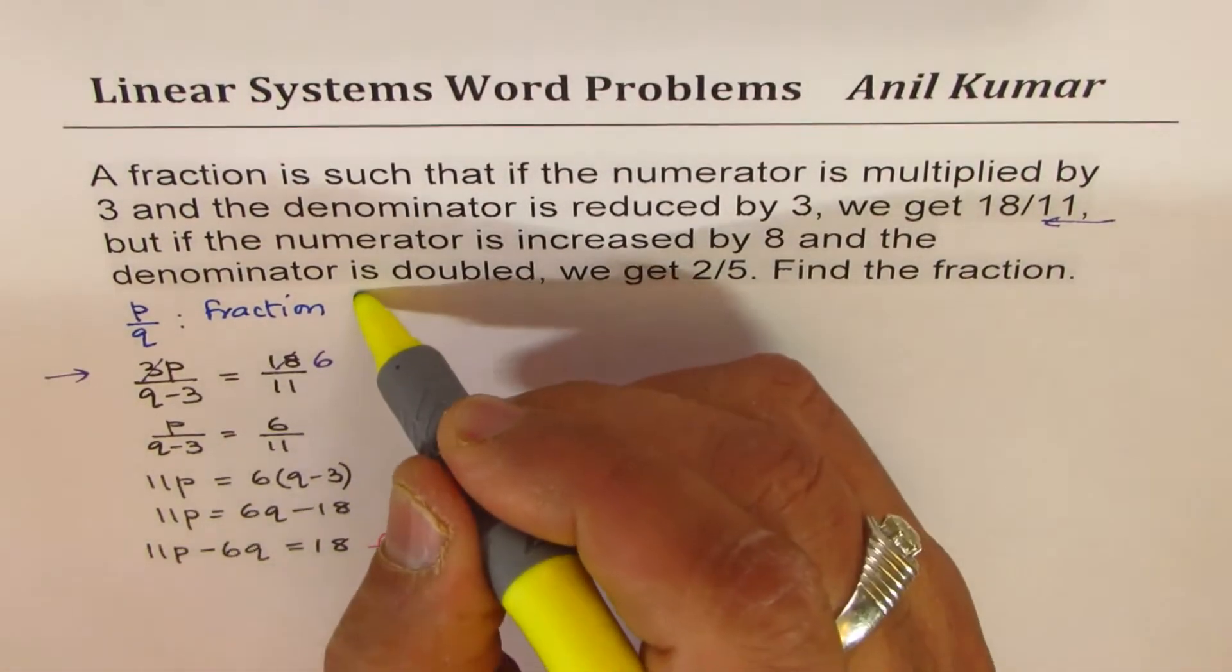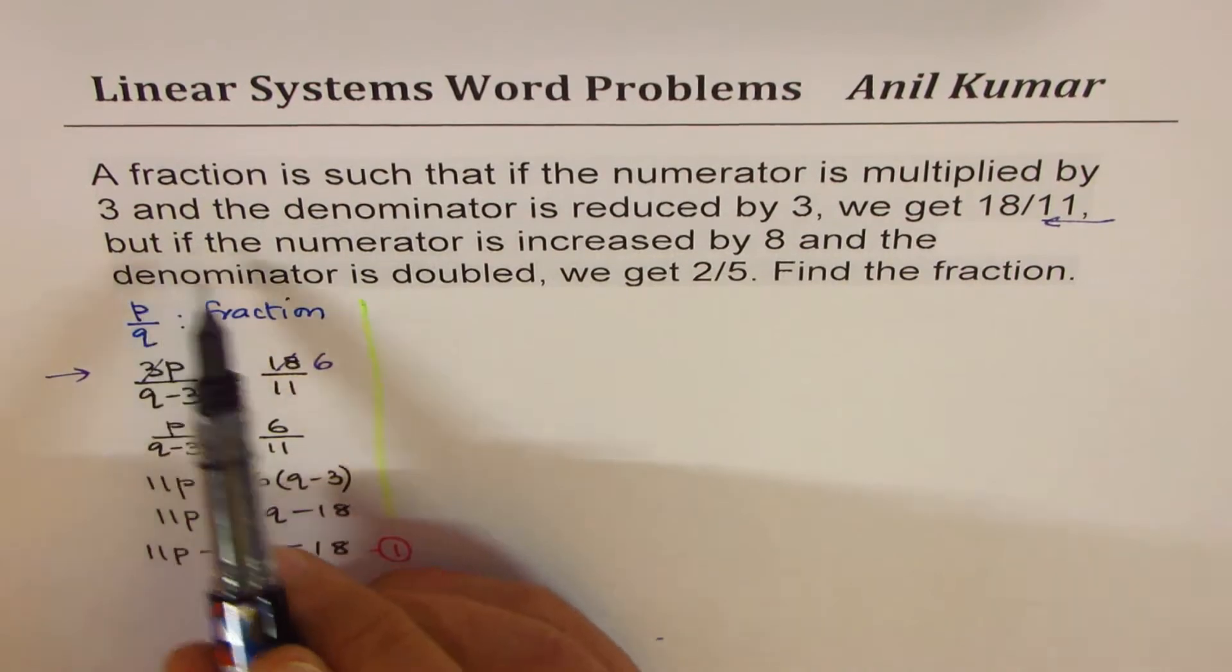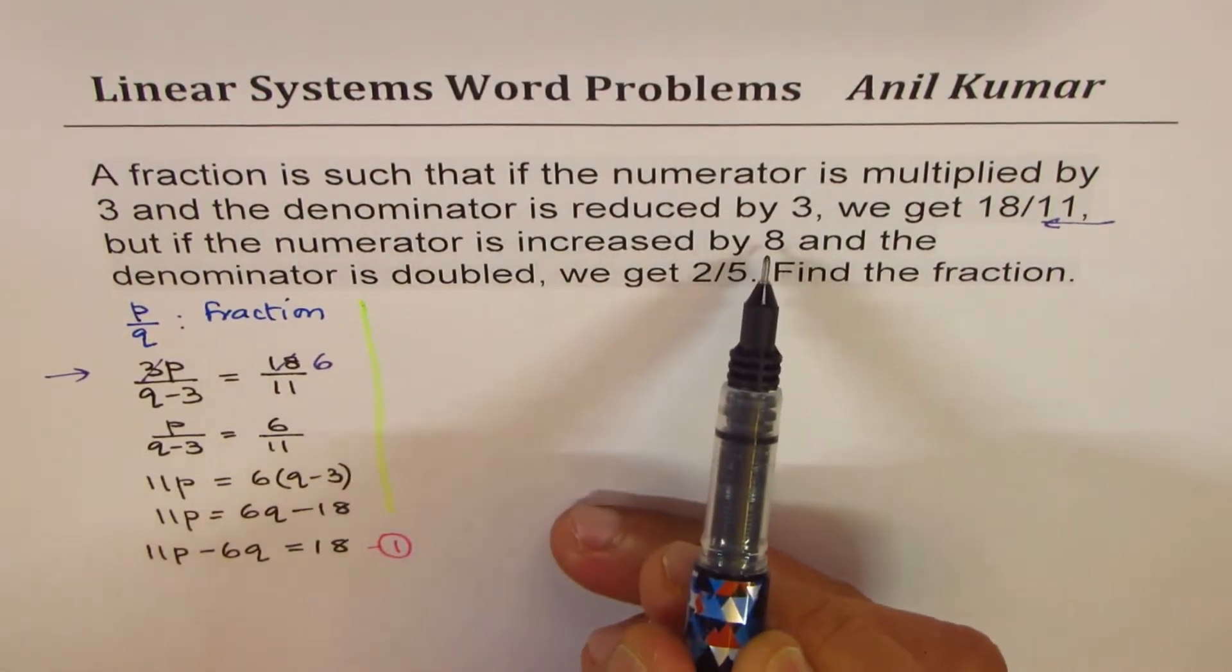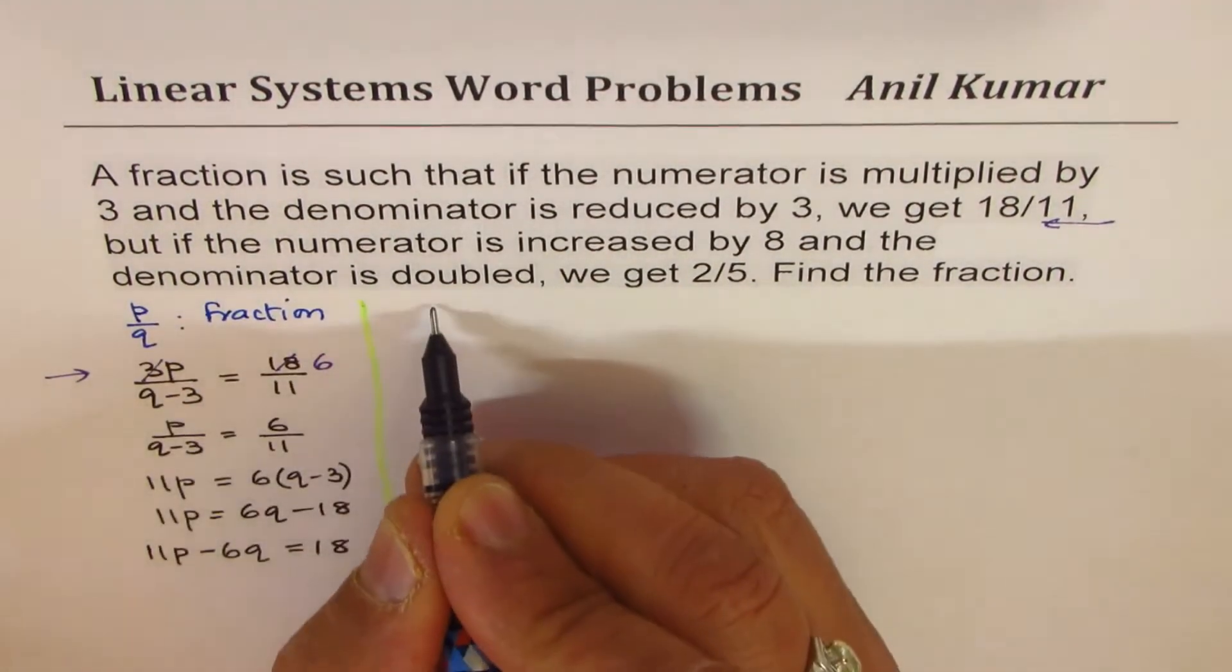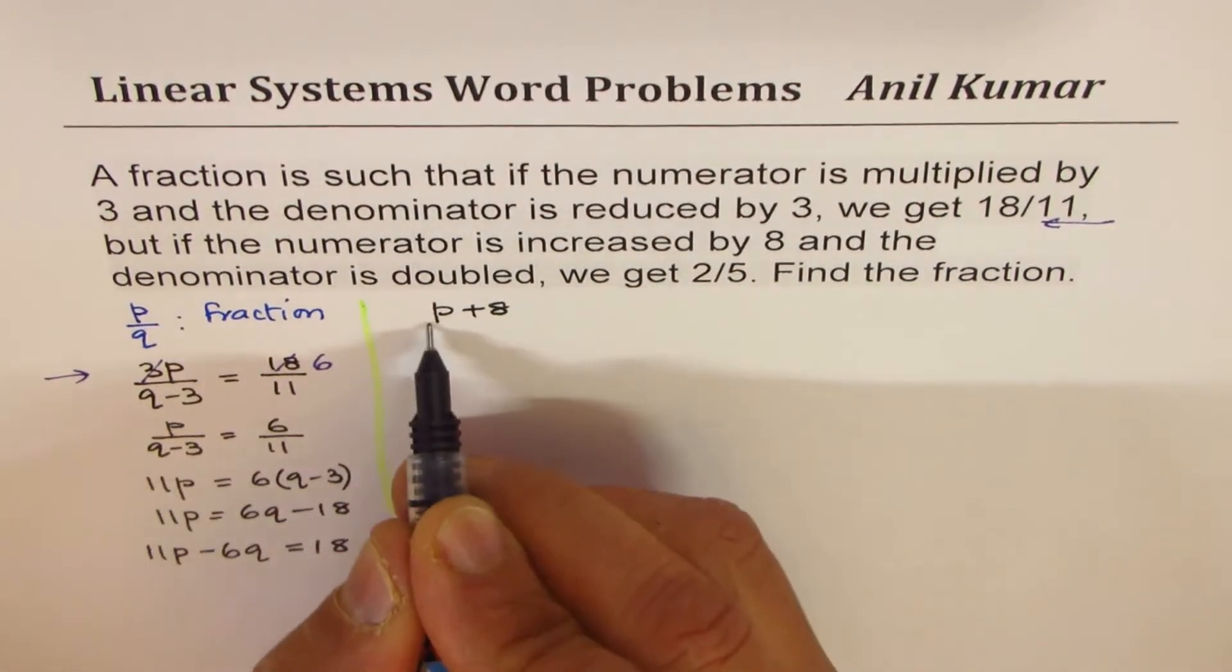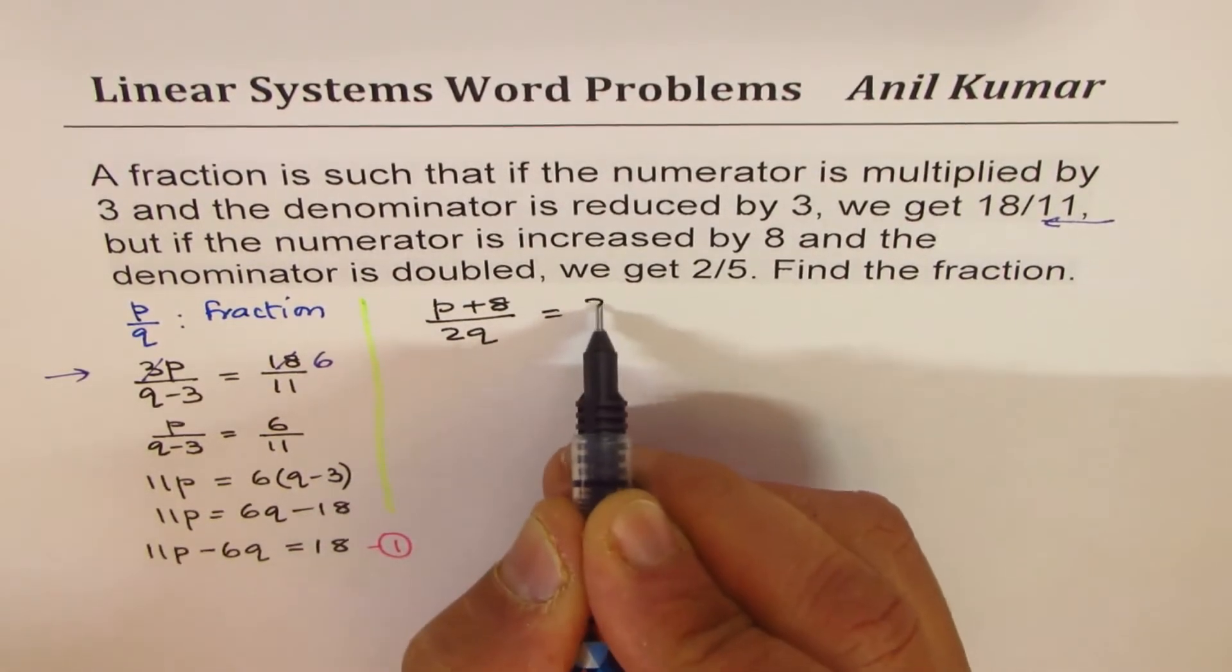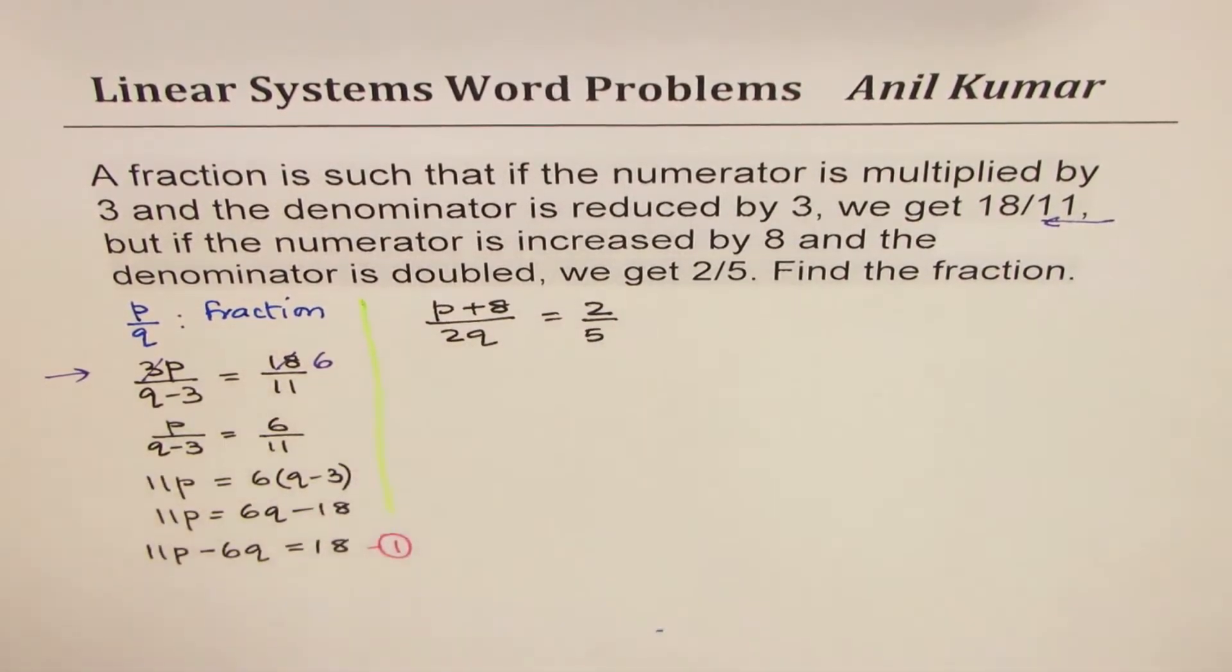Now let's read the next statement and try to form another equation. It says, but if the numerator is increased by 8, that means this numerator p is increased by 8 and the denominator is doubled, that means twice q, we get 2 over 5.